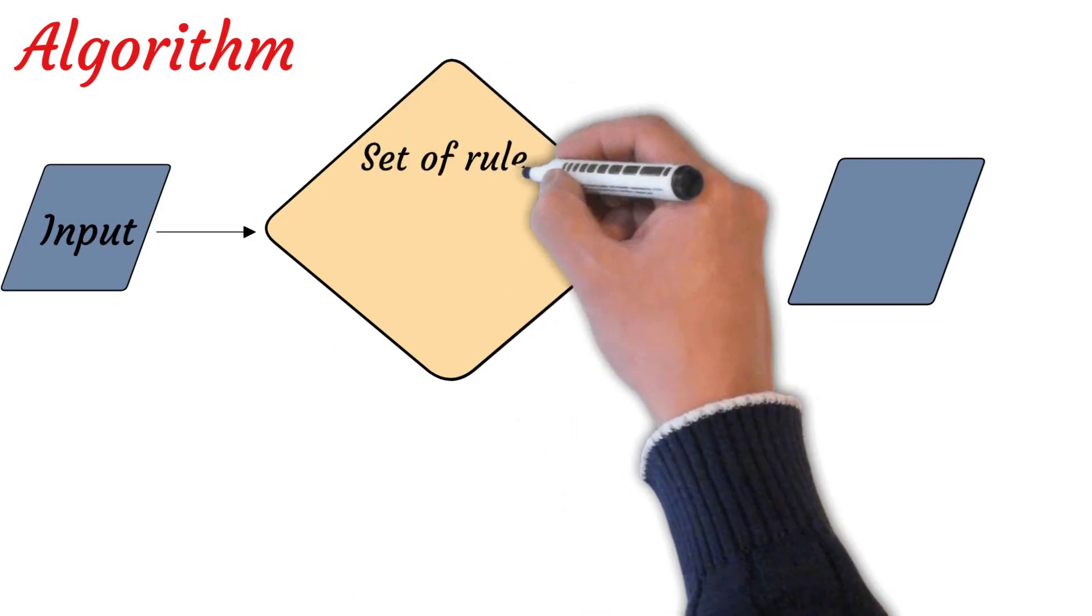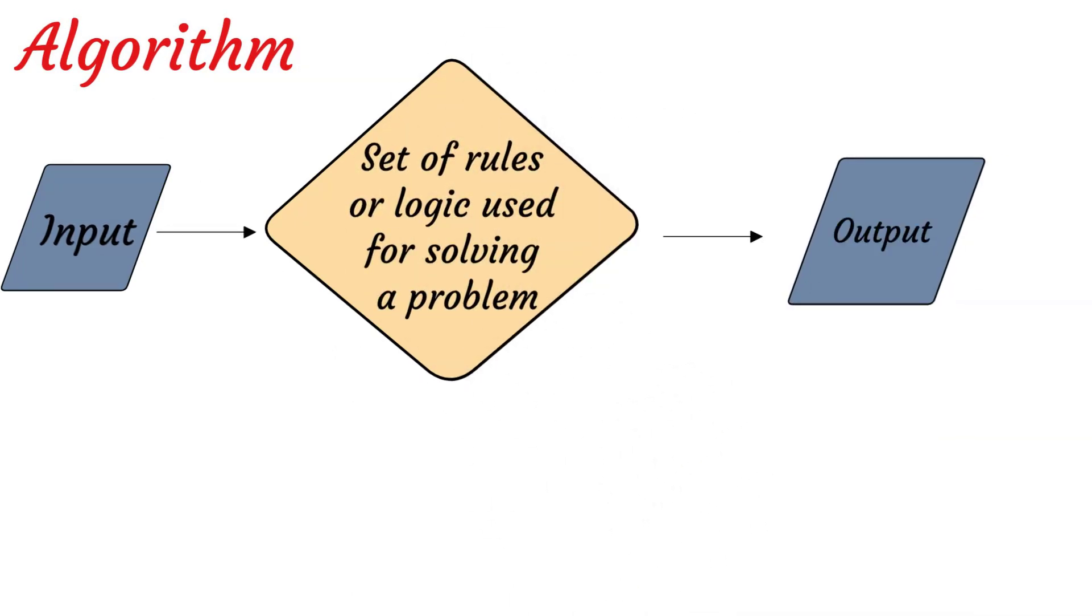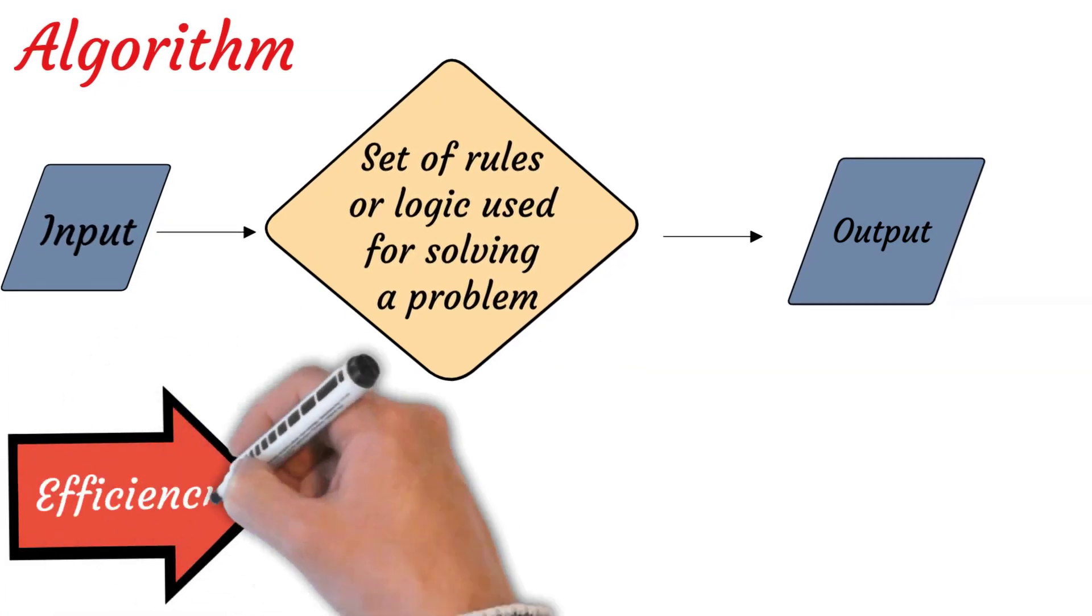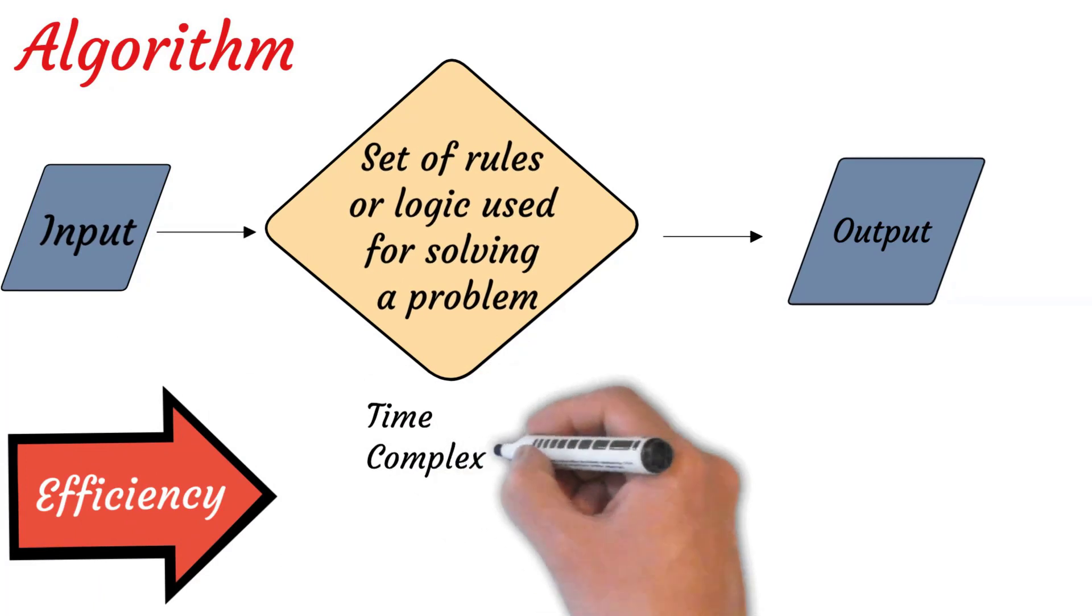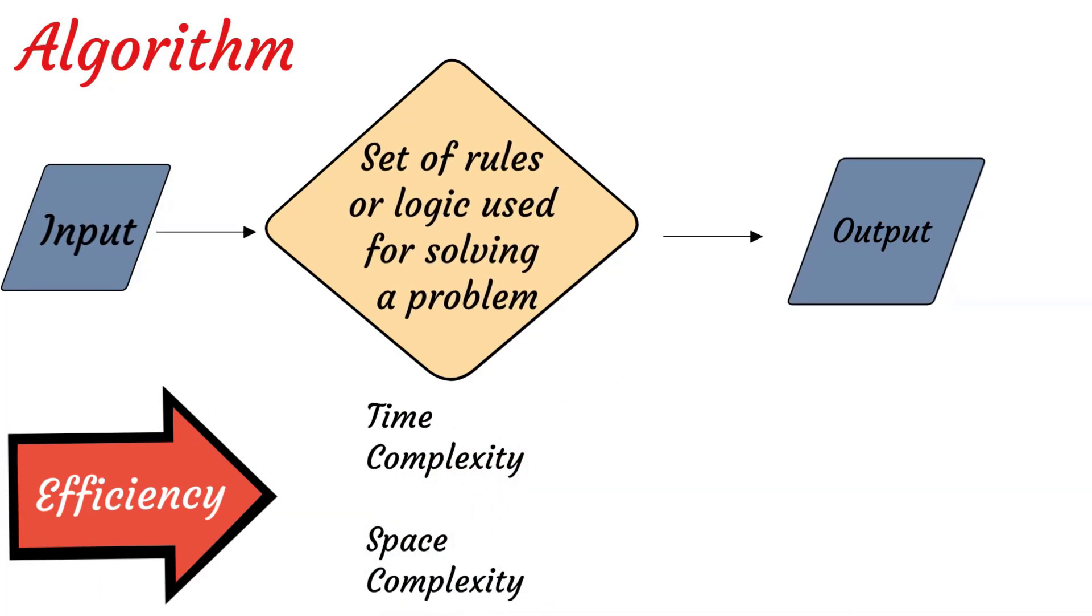Algorithms are nothing but a set of rules or logic used for solving a problem. When you are developing an algorithm, you should aim to develop in a way that it should consume lower memory space and less time to execute. The efficiency of an algorithm is determined through time complexity and space complexity. Time complexity is the total time required by the program to run till its completion. Space complexity is the amount of memory used by the algorithm to execute and produce the result.